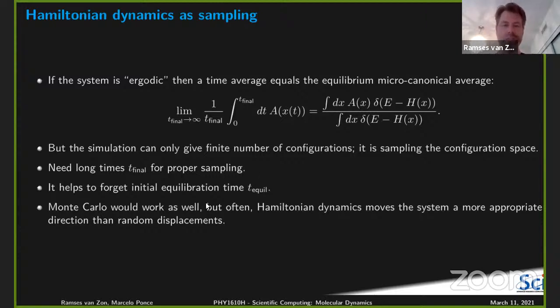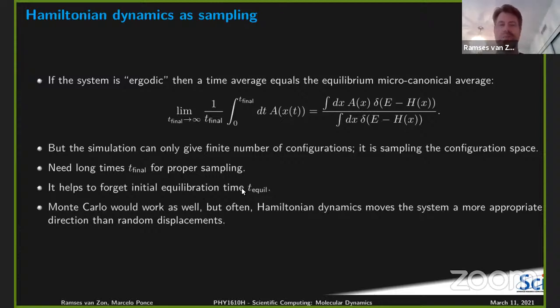So often people equilibrate their system — that's what they call it — by dropping the initial part of their simulation. Some T-equilibration time is just the system finding equilibrium, and you don't want those artifacts to pollute your actual average. Sometimes they call this burn-in time.